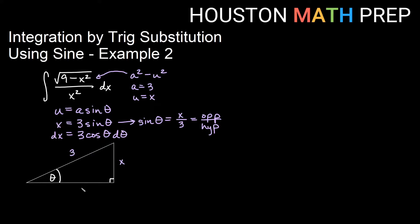And then if this squared plus this squared equals the hypotenuse squared, then we will actually get this side being the square root of 9 minus x squared. You can work that out if you'd like. And we'll use all of that and write everything in terms of theta.